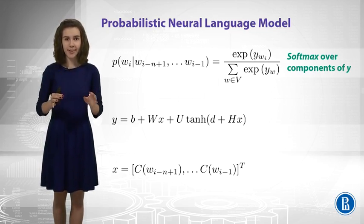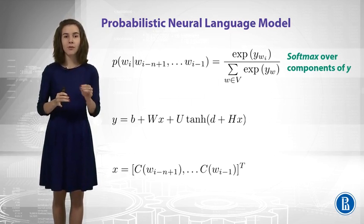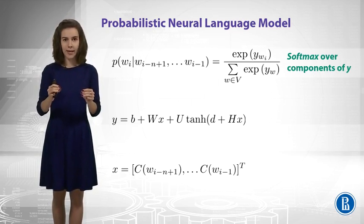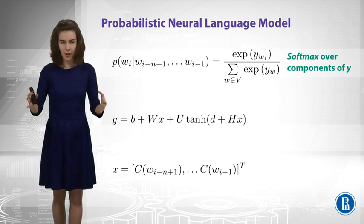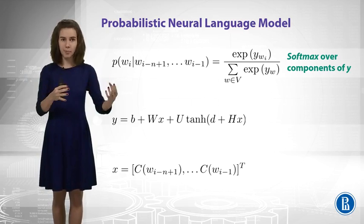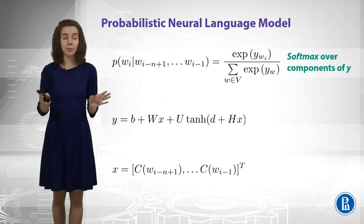So, the last thing that we do in our neural network is softmax. We apply it to the components of Y vector. The Y vector is as long as the size of the vocabulary, which means that we will get some probabilities normalized over words in the vocabulary, and that's what we need.